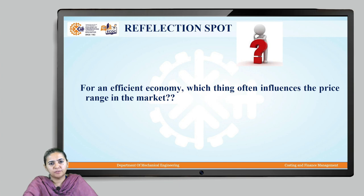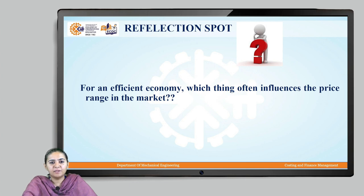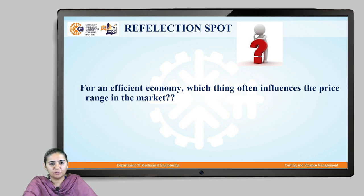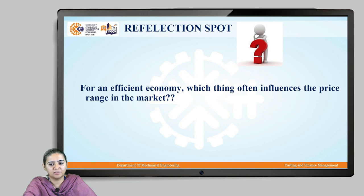The thing which often influences the price range in the market is the scarcity of the resource. For example, consider a fruit which is out of season and not possible for the market to keep in stock. In such a situation, the price of that particular fruit will be much higher than the other available fruits. The main challenge for the market will be to retain its efficiency while coping with the higher price. So, for an efficient economy, the thing which often influences the price range is the scarcity of the particular resource or product.